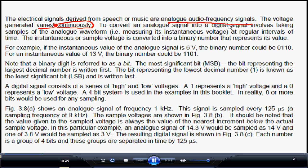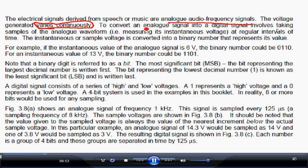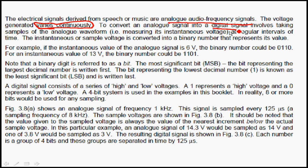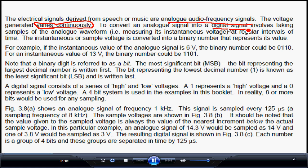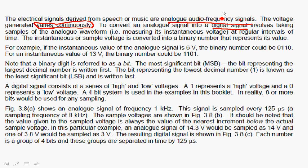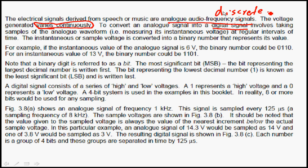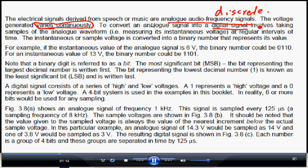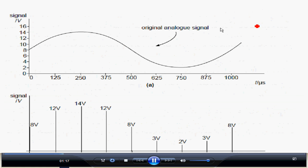A digital signal involves taking samples of an analog waveform, which means a digital signal contains binary numbers. Digital signals are discrete - you can use the word discrete for digital signals. Now we need to know how to convert analog signals into digital signals.